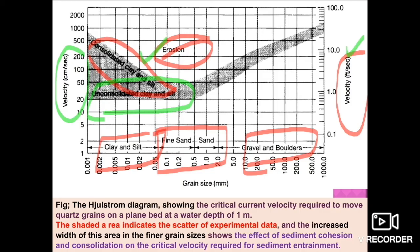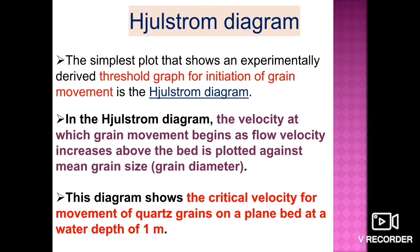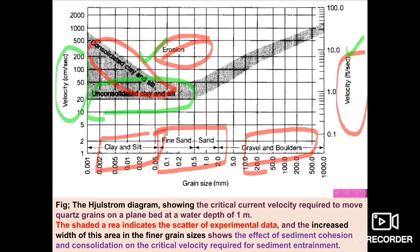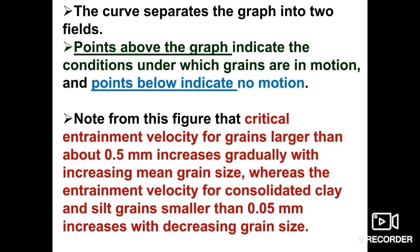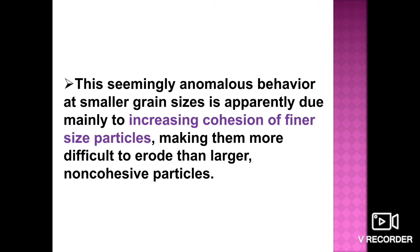The area referred to is the consolidated clay and silt mineral region of the diagram. This seemingly anomalous behavior at smaller grain sizes is apparently mainly due to the increasing cohesion of finer-size particles, making them more difficult to erode than larger, non-cohesive particles.